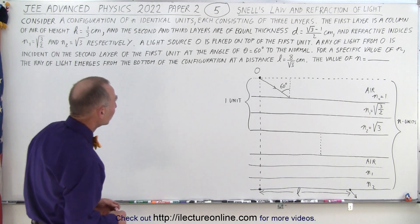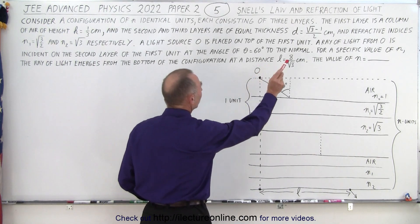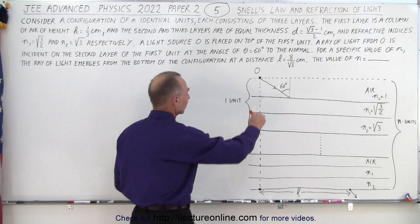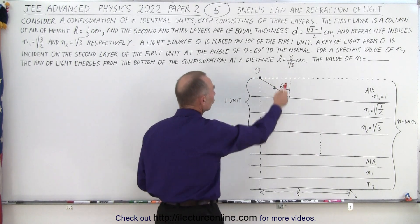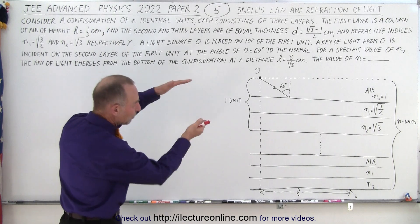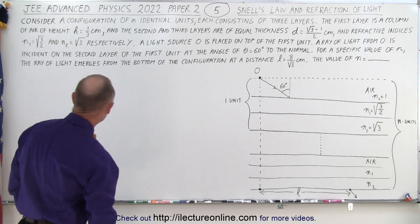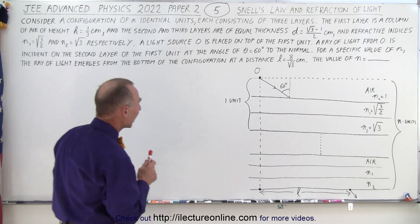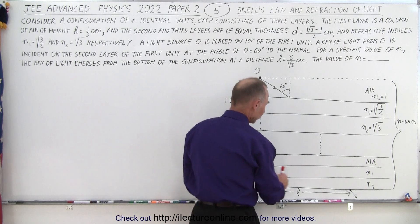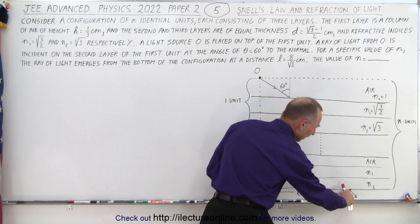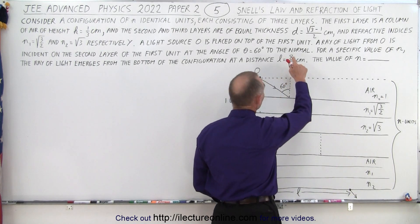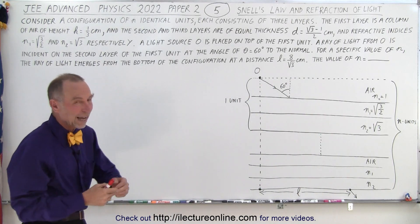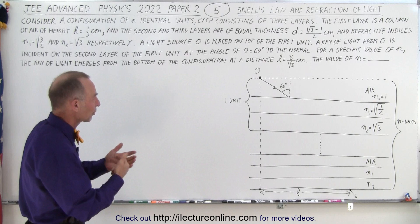A light source is placed on top of the first unit. A ray of light from O is incident on the second layer of the first unit at an angle of 60 degrees relative to the normal. For a specific value of n — the number of units of three layers each — the ray of light emerges from the bottom of the configuration at a distance of L = 8/√3 centimeters. The question is: how many units of layers are there?